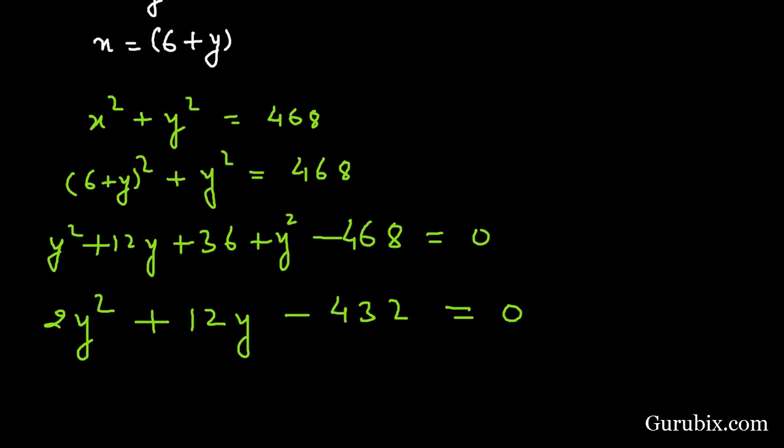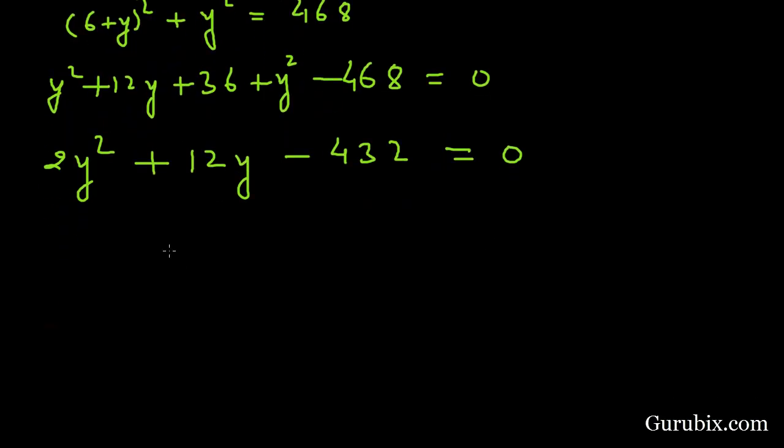Now we shall divide both sides by 2, then we have y square plus 6y minus 216 equals 0. This is our quadratic equation. Now we shall factorize it using the method of splitting middle term. So we shall split middle term like this: 18y minus 12y, here we have 216 equals 0.